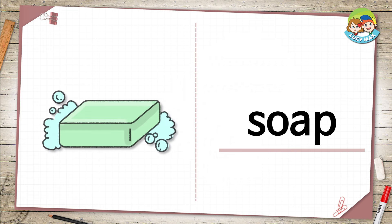Soap. This is soap. When you rub it, it makes bubbles. We use soap to wash our hands, face, and other parts of our body. After we use soap, our hands are clean.